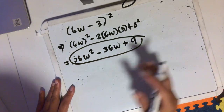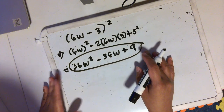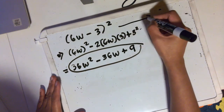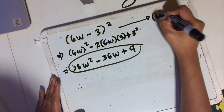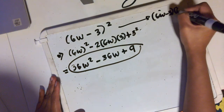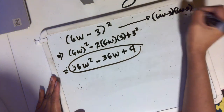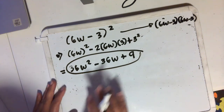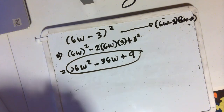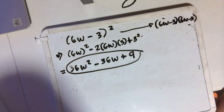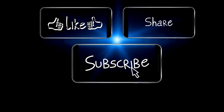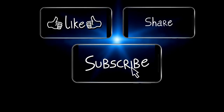If you would like to know whether your final answer is correct, you can always check using the FOIL method by doing 6w minus 3 times 6w minus 3. But I'm telling you right now, this is correct even if you use the FOIL method. So thank you very much, everyone, for watching.